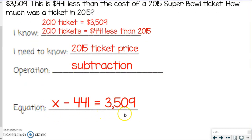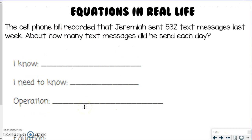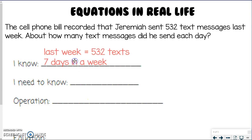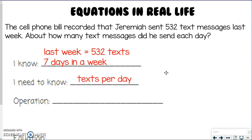Make sure you are writing it in the correct order — we want to be taking away the $441 in this case. Moving on: the cell phone bill recorded that Jeremiah sent 532 text messages last week. About how many text messages did he send each day? I only see one number, but the other number is sneakily there. We know he sent 532 text messages last week. The question asks how many per day — if it was a week, there were seven days. So those are the two pieces we know: 532 texts last week and seven days in a week. The part we need to know is how many texts did he send per day — that's our variable.